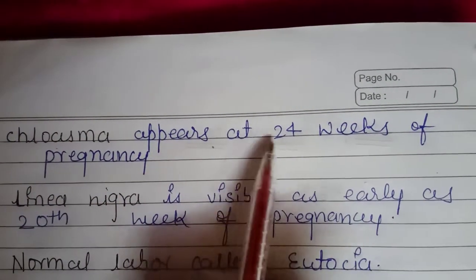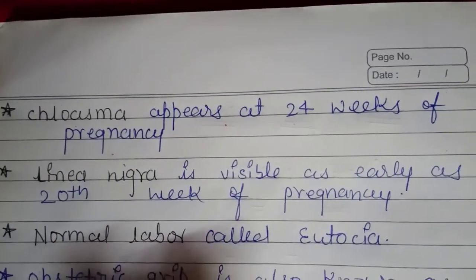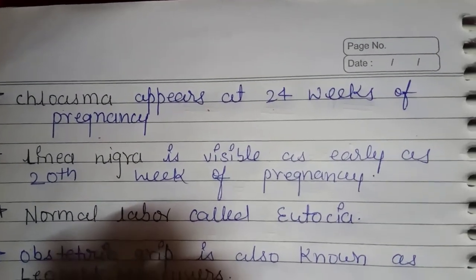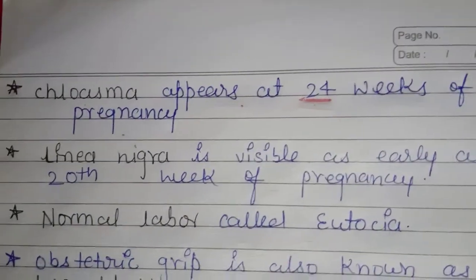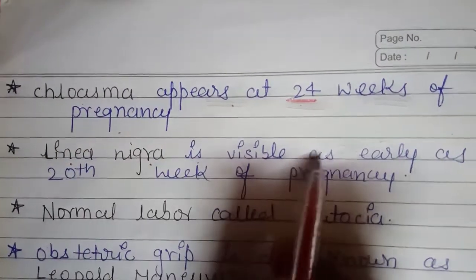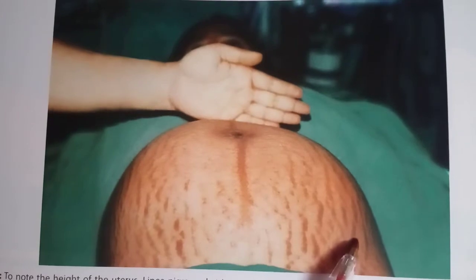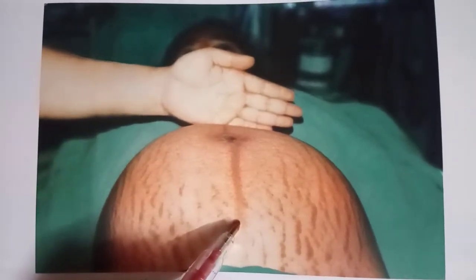Chloasma appears at 24 weeks of pregnancy. So if a question asks when the pregnancy mask — also called melasma or chloasma gravidarum — appears, the answer is 24 weeks of pregnancy. Next, linea nigra is visible as early as the 20th week of pregnancy. Linea nigra is the dark line visible on a pregnant lady's abdomen.